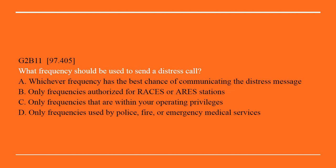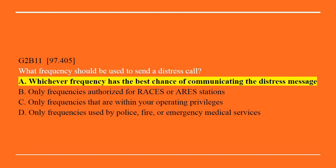G2B11: What frequency should be used to send a distress call? A. Whichever frequency has the best chance of communicating the distress message. B. Only frequencies authorized for RACES or ARES stations. C. Only frequencies that are within your operating privileges. Or D. Only frequencies used by police, fire, or emergency medical services. Correct answer is A: Whichever frequency has the best chance of communicating the distress message. That will end the second video of the General Class 2019-2023 question pool. Please continue as we slowly roll out more videos. Thank you for joining us.